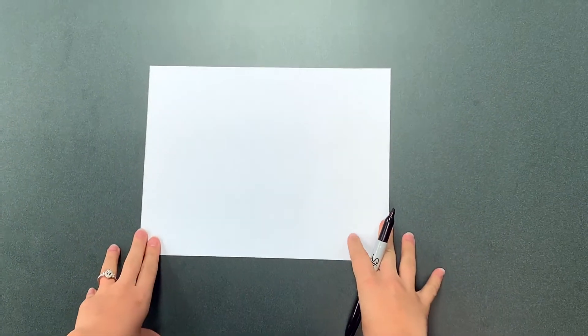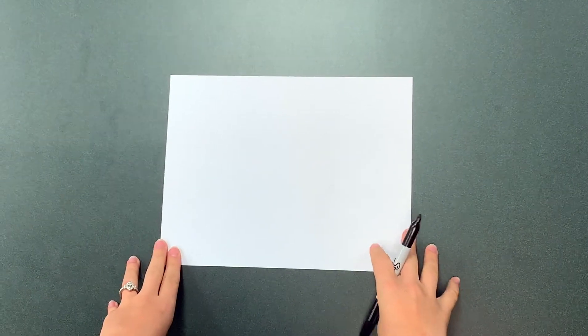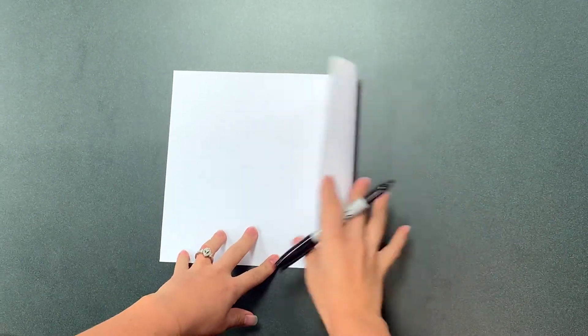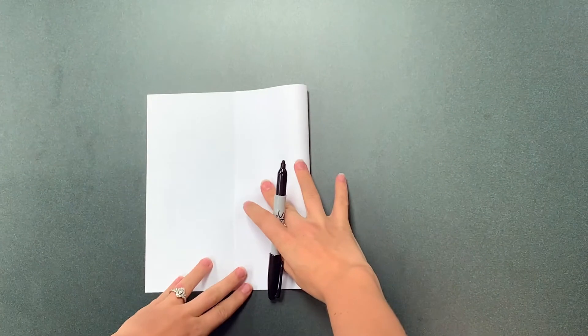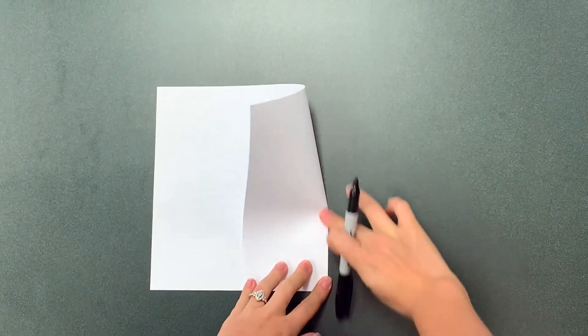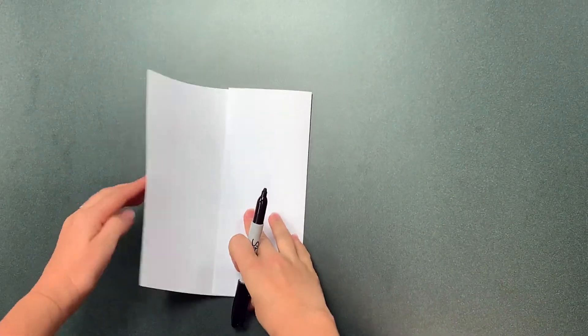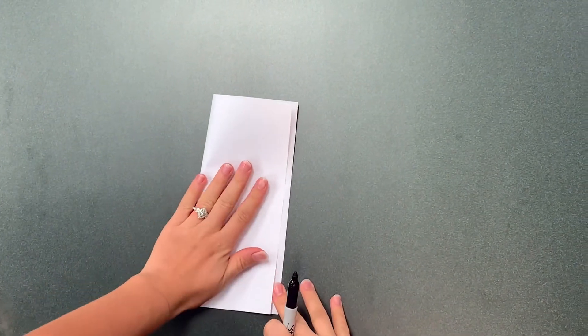You're going to take your letter-size piece of paper, which would be eight and a half by eleven, and fold it back to the middle and crease it, then fold the front over.